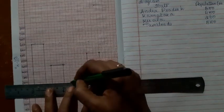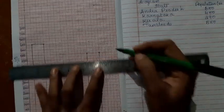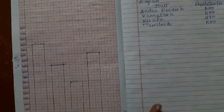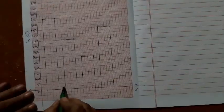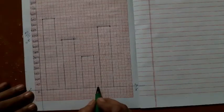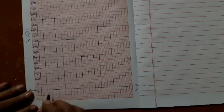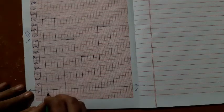It is 290. 290 is here. So, the space between the bars is the same. Now, this is Andhra Pradesh.